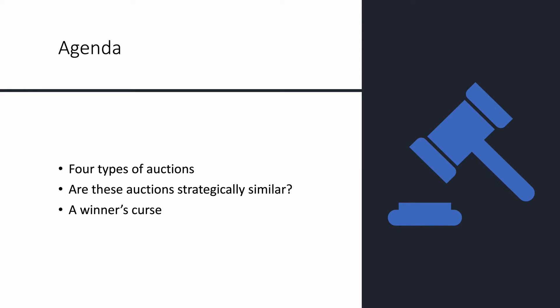Specifically, we're going to introduce three topics. First, we'll examine four different types of auctions. Then we'll examine in what sense these auctions differ, and more interestingly, how they are strategically similar to each other. And finally, we'll look at an interesting phenomenon in auctions called a winner's curse.